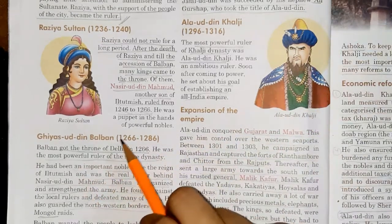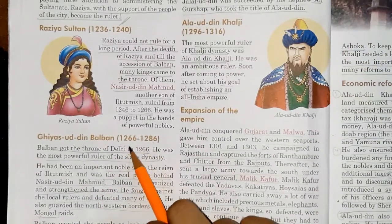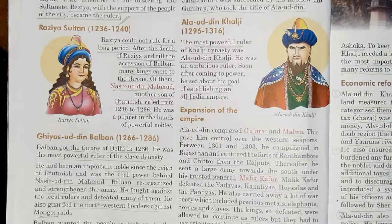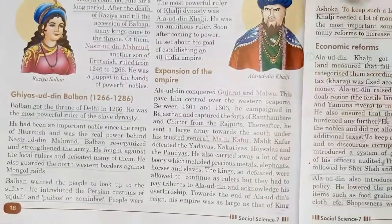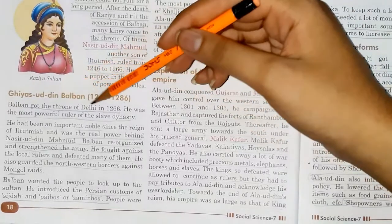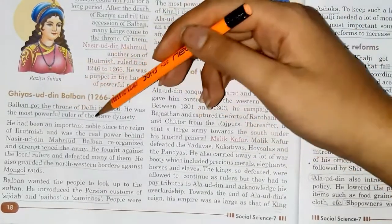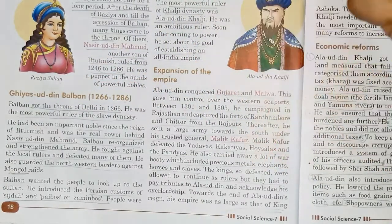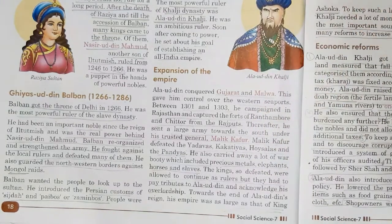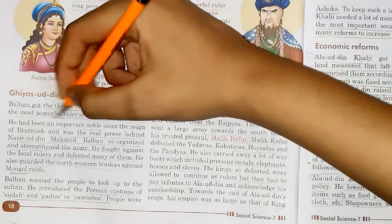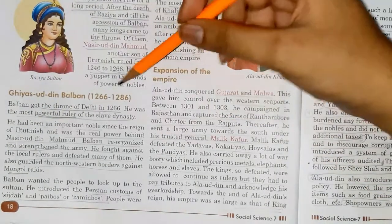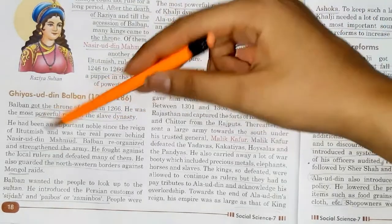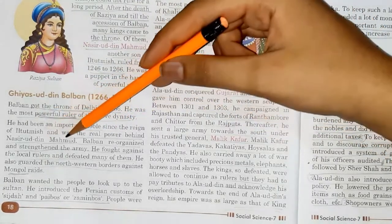Then we come to Gyaasuddin Balban, who ruled from 1266 to 1286, approximately 20 years. Balban got the throne of Delhi in 1266 and was the most powerful ruler of the Slave Dynasty. So the first ruler was Qutubuddin Aibak, the founder was Iltutmish, and the most powerful ruler was Gyaasuddin Balban. He had been an important noble since the reign of Iltutmish and was the real power behind Naziruddin Mahmood.